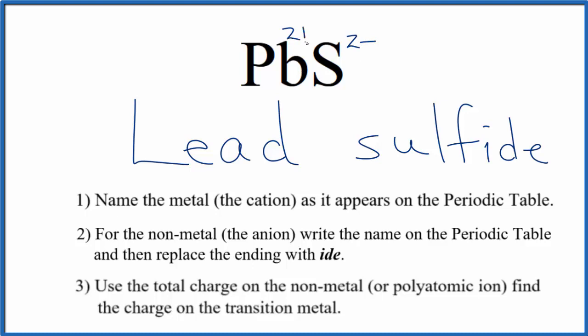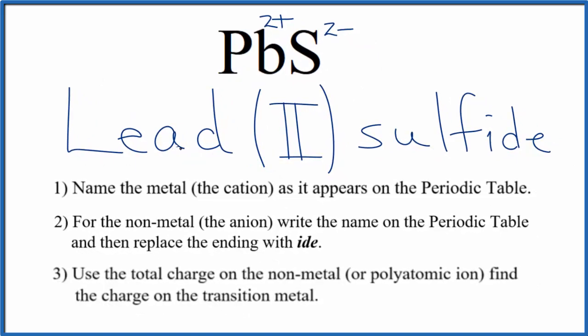So the lead has to be two plus for these charges to add up to zero, give us a net charge of zero. So we're going to write a Roman numeral two in parentheses between these two names here. So the name for PbS is lead two sulfide.